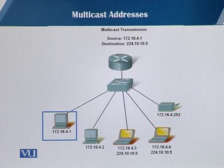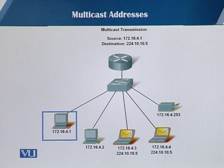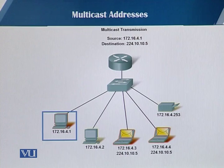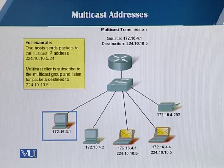Then you have a multicast address example where one sender is basically sending data to multiple or a group of machines. All those machines have the same multicast address. As you can see on the slide, 224.10.10.5 is a multicast address, and all the machines are going to receive this multicast communication because they share that same multicast address.